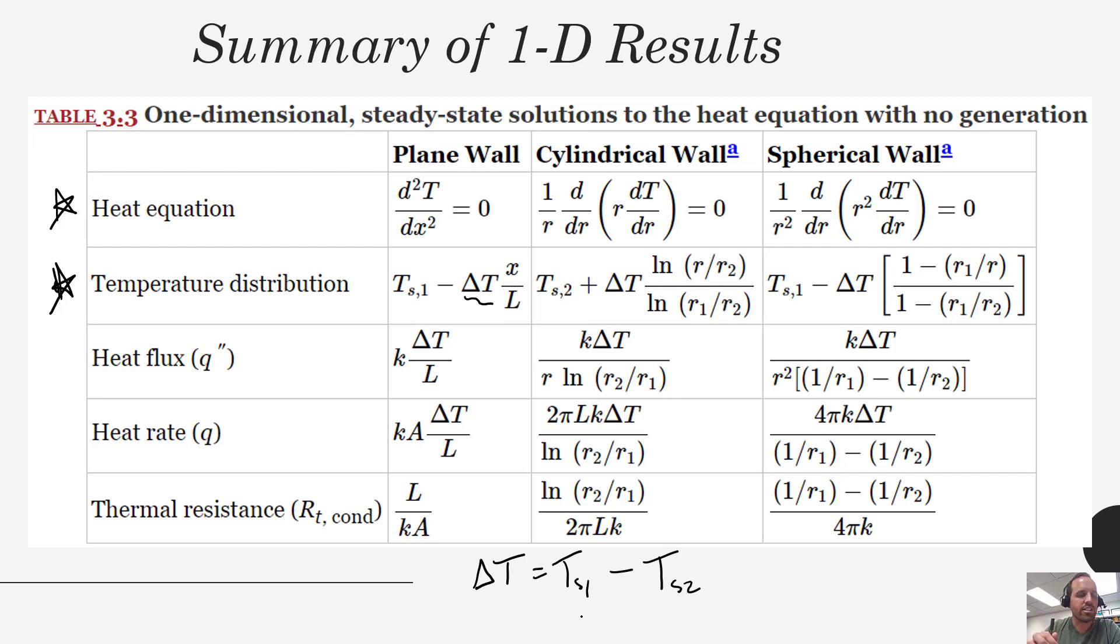We can take our temperature distribution and apply Fourier's law and differentiate that temperature distribution, multiply that by minus K, and that will give us our heat flux. And notice that these all show up as positive terms rather than negative terms and that is just because of the way we've defined this ΔT. Whereas if we defined it as TS2 minus TS1 we'd see those negatives come in. So just keep in mind the temperature difference when using this table is defined a little bit differently than we've been defining it previously.